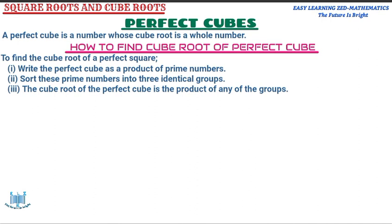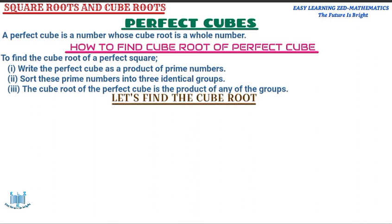Let me show you how to find the cube root of a perfect cube. The question is: find the cube root of 729. I've picked 729 because it's a perfect cube. I'm going to write this number and divide it by its smallest prime factor.